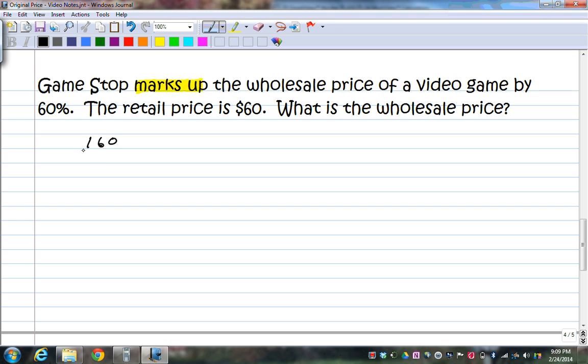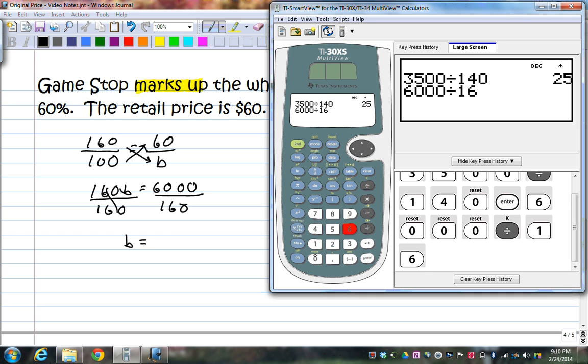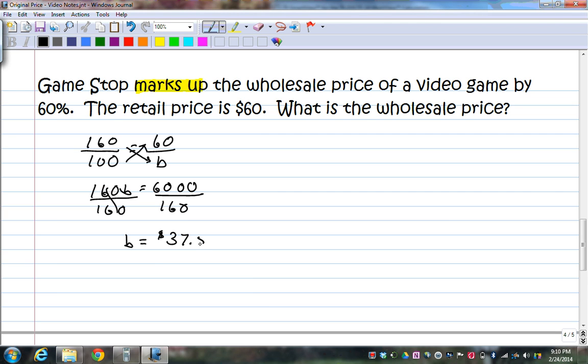So, 100 plus this 60 is 160 over 100 is equal to 60 over B. Cross multiply, I get 160B here. And then I get here, 6,000, divide both sides by 160. And B is equal to, let me do 6,000 divided by 160. And it's 37.50. So, $37.50 is the price of the game before it is marked up. Or the wholesale price of the game.